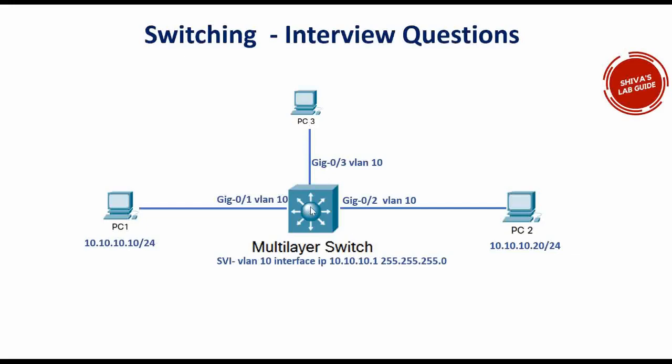You can put your answer in the comment section — I'll go through those answers and update the correct answer. Once again, the question is: how does a Layer 3 switch — a multi-layer switch — know when to do routing and when to do Layer 2 switching when a packet comes into the switch?